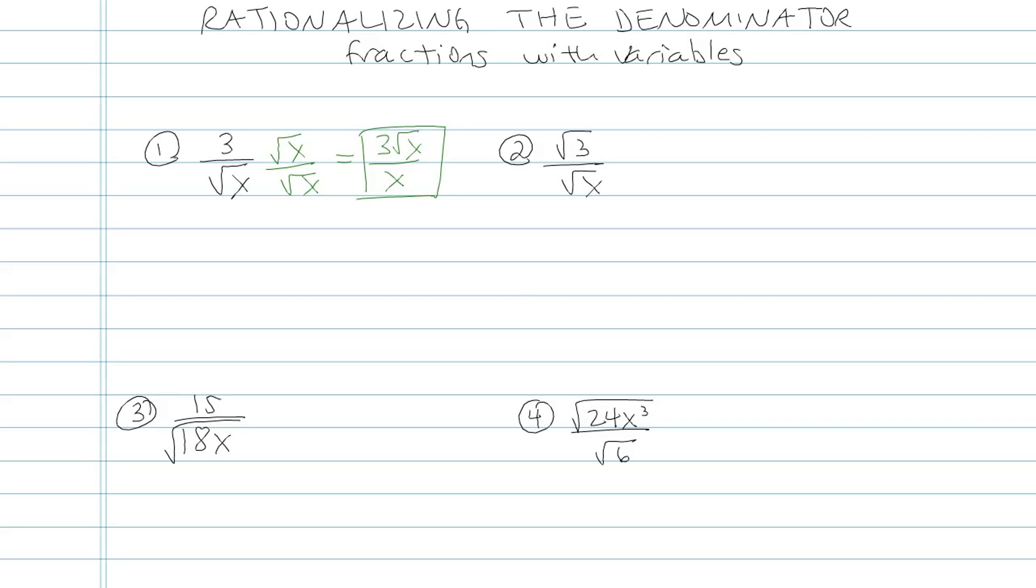Look at number 2. Same idea. Square root of x on the bottom is bad. By the way, numbers 1 and 2 are very similar. The only difference is in number 2 now the top is square root of 3. So just like before, I'm going to multiply by root x over root x, so I'll end up with square root of 3x all over regular x. It cannot be simplified any further.